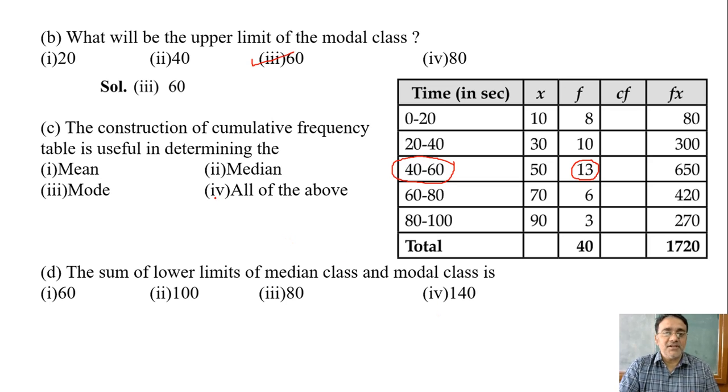Now the next question: the construction of cumulative frequency table is useful in determining the mean, median, mode, or all of the above. Which one? CF we need to find? Median. Yes. The correct answer is median.